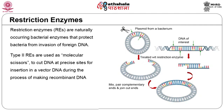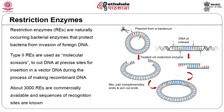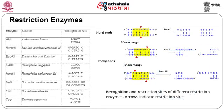There are three classes of restriction enzymes, which differ in the site of cleavage with reference to the recognition sequence. Type 2 restriction enzymes cleave the DNA within the recognition site and are used widely in genetic engineering. Over 3000 type 2 restriction enzymes with known recognition sequences are commercially available. Restriction enzymes require magnesium as a cofactor and a specific pH and salt concentration for their activity.